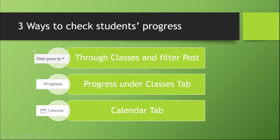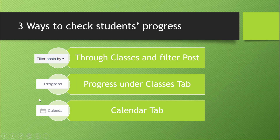In your specific class, when you open it, you can see an option to filter posts by assignment or by quiz, so you can monitor the progress of your students. Second, under the Classes tab, there is also a way to check student work through the Progress button. And last, the Calendar tab shows all the quizzes and assignments you have given across all of your subjects. Let us proceed to the Edmodo environment to discover all of these ways.